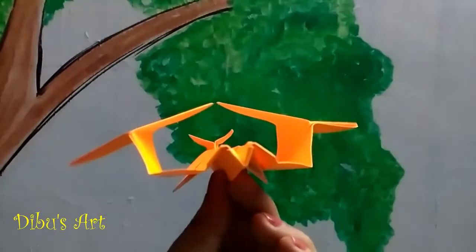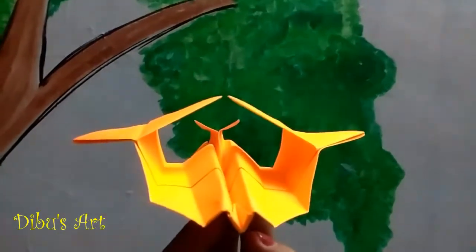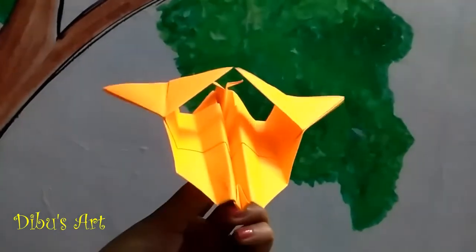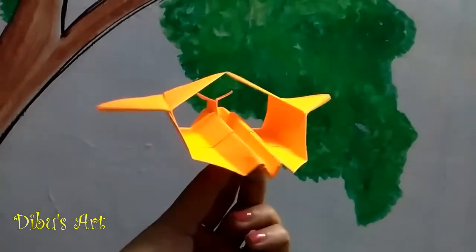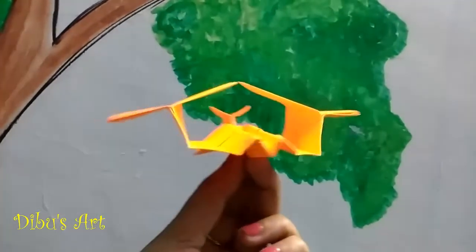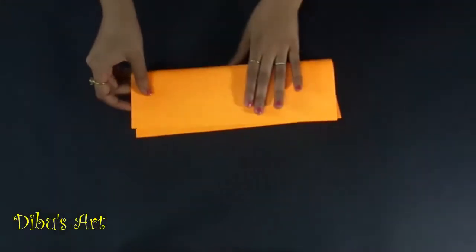Today we are going to learn how to make a paper plane model of Bell Boeing V-22 Osprey helicopter. It is really easy and fun to make. You can use an A4 size or regular printing size paper of any color of your choice for this.